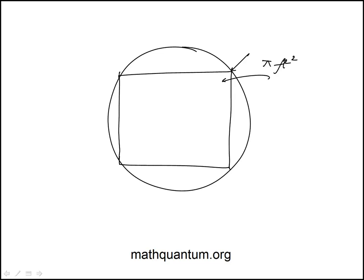So we have to somehow relate the radius or diameter of the circle to the side of the square.